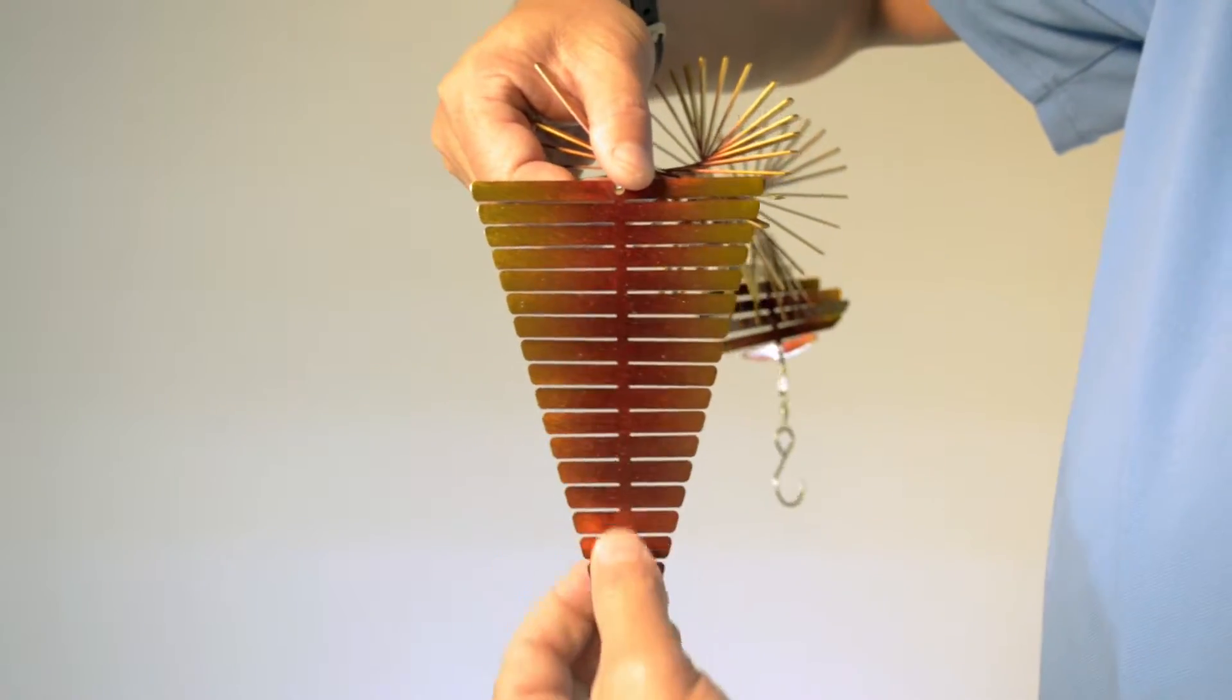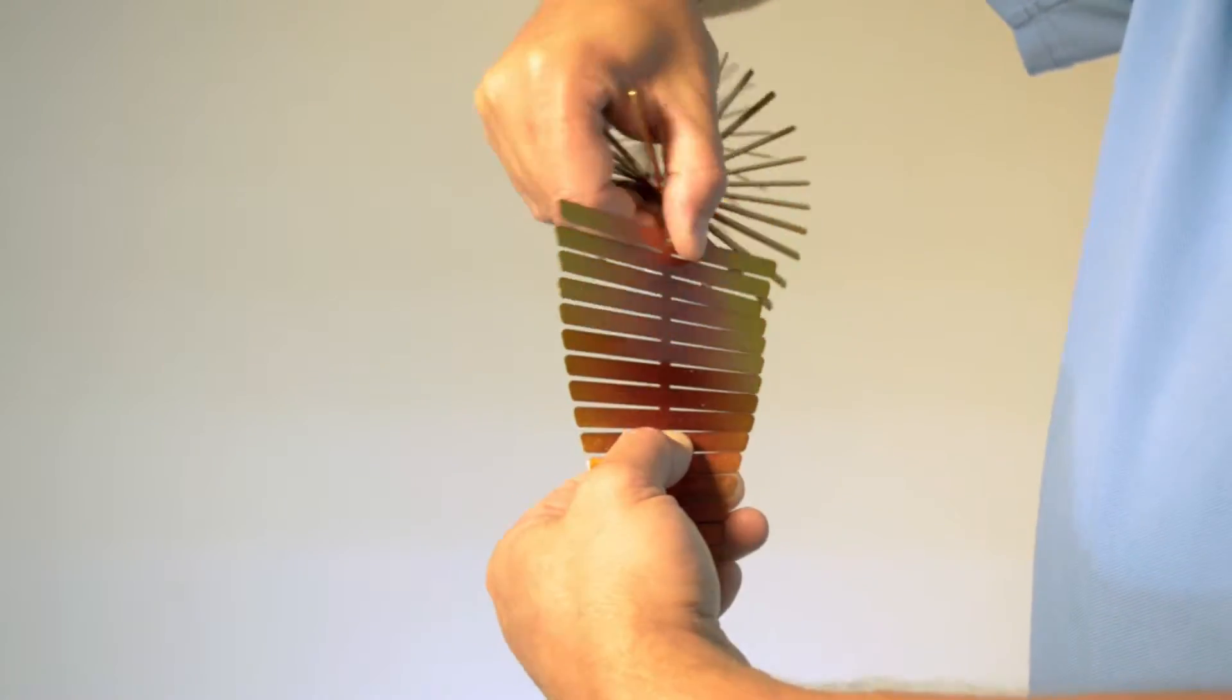Repeat for the tail. Again, you might want to separate into two separate stages.